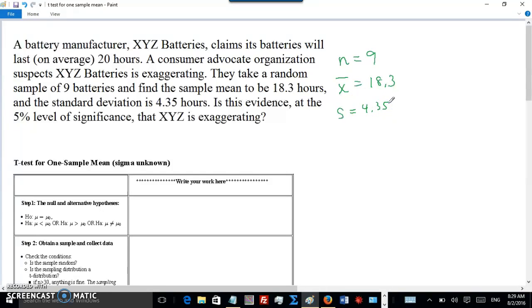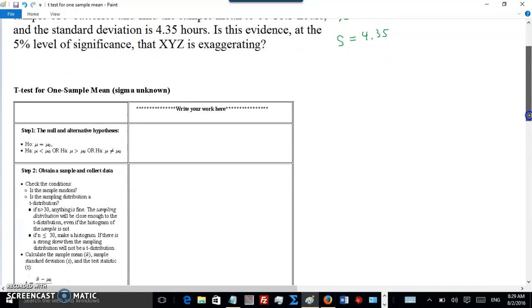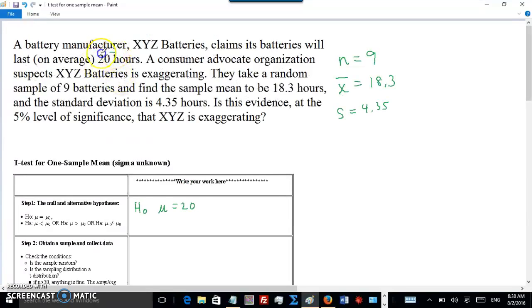We don't know the population standard deviation, so we cannot use the normal curve. We'll have to use the T-distribution for this one. Is this evidence at the 5% level of significance that XYZ is exaggerating? Let's go through the steps. Step one: the null and alternate hypothesis. The null is that mu equals 20. The company, XYZ Batteries, is not lying; their claim of 20 hours is true. The alternate says that they're exaggerating. In other words, the real mean is less than 20. So mu less than 20.